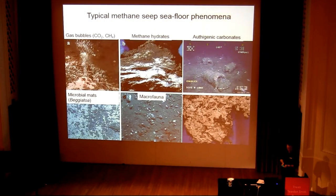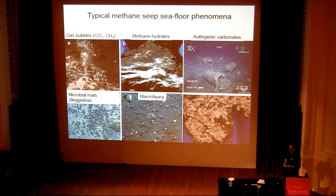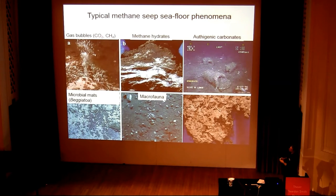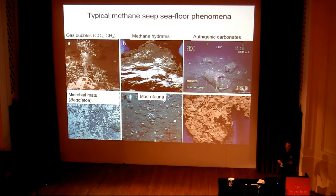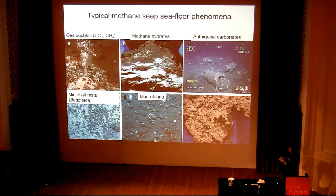At modern methane seeps, if the flux is very high, you'll see vigorous outflowing of bubbles from the seafloor, including methane and carbon dioxide. If the temperature is cold enough and the water pressure is great enough due to water depth, in the subsurface you actually find methane ice — these are the famous methane hydrates, or clathrates.